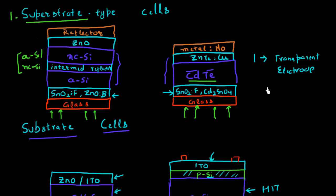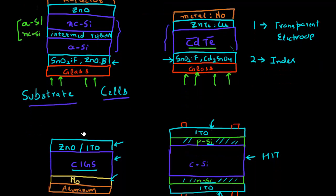The other functionality that this TCO material often enables is that it acts as an anti-reflective coating. It acts as an index matching layer between your glass in the superstrate configuration, or your air in the substrate configuration.